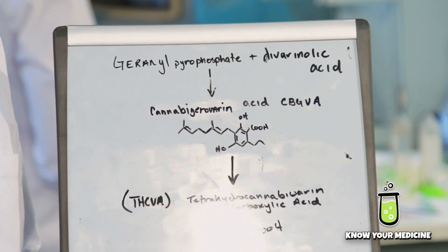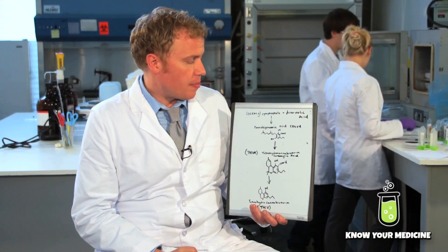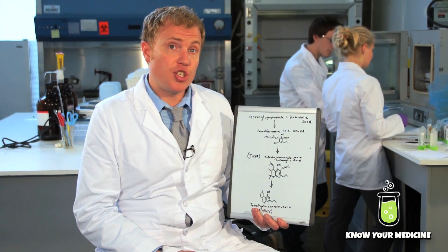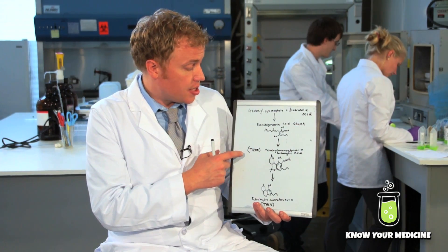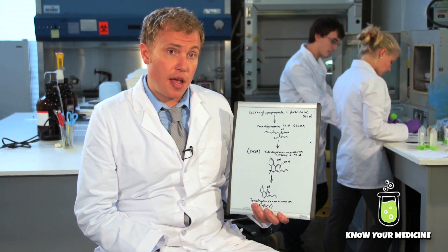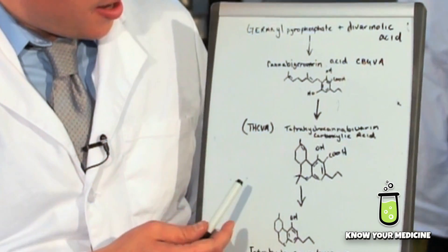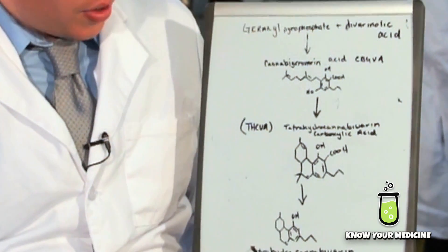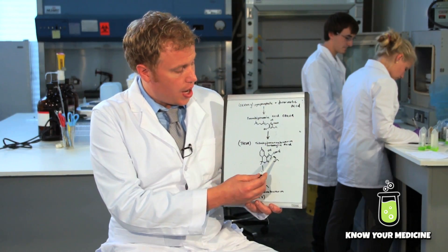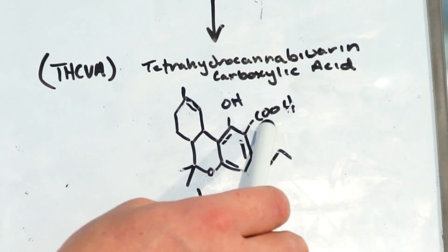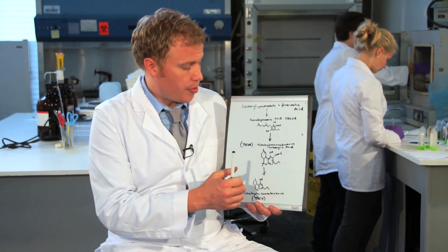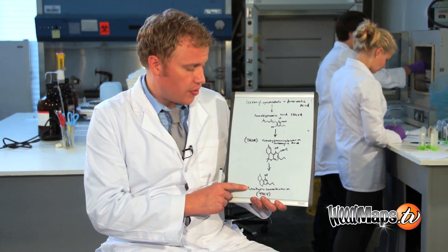The two compounds combine through an enzymatic process to form CBGVA. CBGVA then synthesizes to THCVA through an enzymatic process using the THCVA synthase enzyme. THCVA is very similar to THCV except it has a carboxylic acid group attached to it, and with heat or over time this carboxylic acid will release from the molecule, yielding THCV.